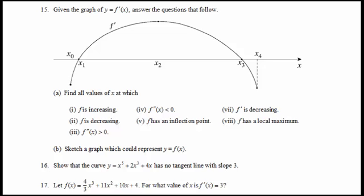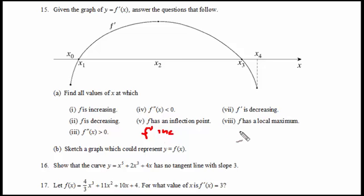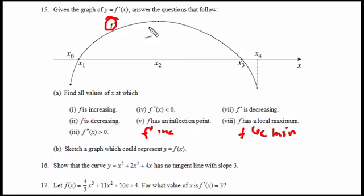Okay, so now this is a little bit tricky. We are getting into problems that have been left unsolved in a lot of cases. We're looking for where f prime is increasing, and also for where f has a local minimum. This graph is f prime — it's not f, it's f prime. So what does f prime tell us?